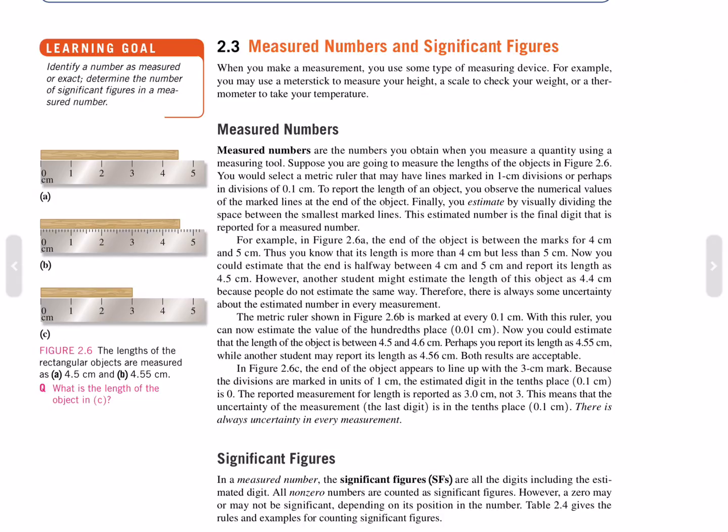The metric ruler shown in 2.6b is marked with every 0.1 cm. With this ruler, you can now estimate the value of the hundredths place, 0.01 cm. Now you could estimate that the length of the object is between 4.5 and 4.6 cm. Perhaps you report the length as 4.55 cm while another student may report the length as 4.56 cm. Both results are acceptable.